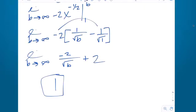That doesn't change the fact that as b goes to infinity, the first term goes to 0. But now we're left with not 1, but 2. We got a bonus 1.